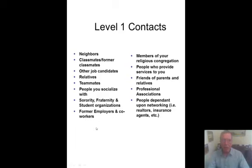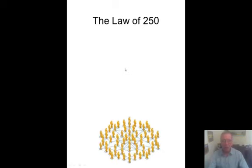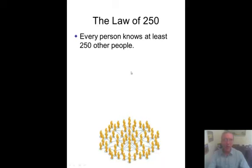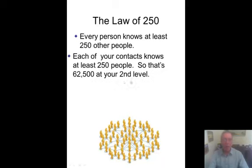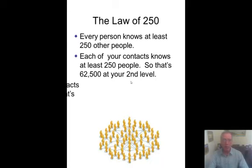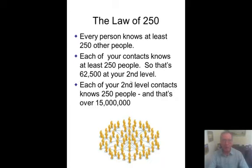Here's a list of the different types of contacts you can have: neighbors, classmates, relatives, people on teams you're a member of, people you socialize with, sororities and fraternities, student groups, former employers and co-workers, members of a religious organization, people in the congregation, people who provide services to you, friends of your parents and relatives, people that are into networking, and professional associations. The law of 250 says every person knows at least 250 other people, and they know 250 people, and so on — that's like 15 million people you can interact with through your network.